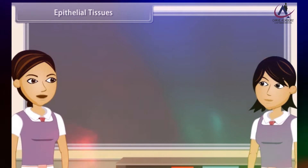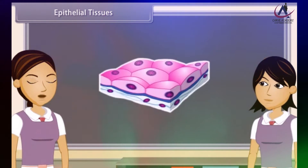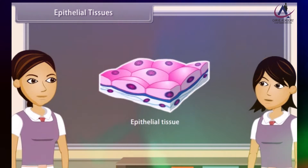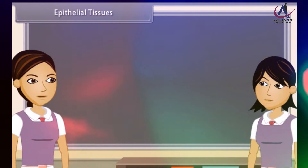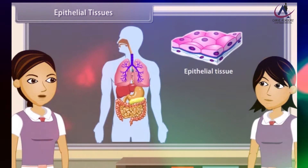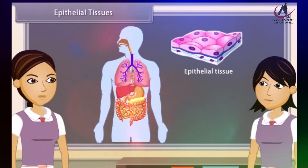Tissues which cover all the organs of the body externally and also line hollow organs internally are known as epithelial tissue. The cells of epithelial tissue are tightly packed and form a continuous sheet. There is no intercellular space or matrix between these cells. Epithelial cells are present in skin, lining of buccal cavity, alimentary canal, kidney tubules, lungs, and glands.